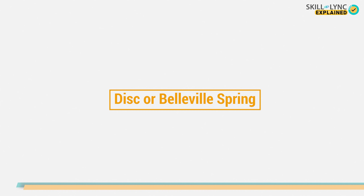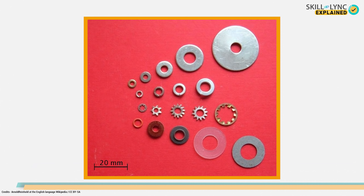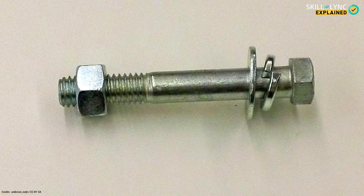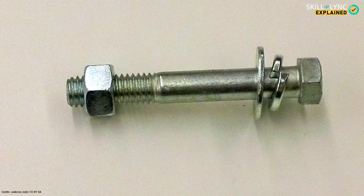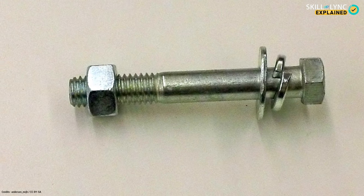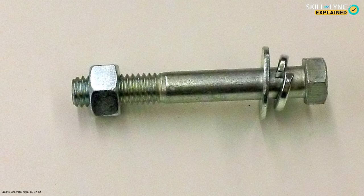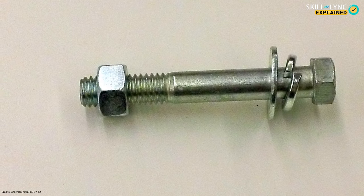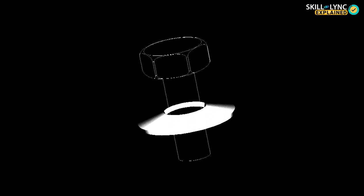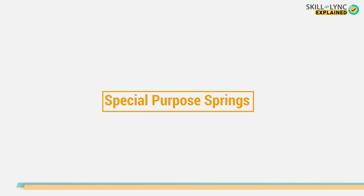The fifth type is the disc or bell spring. These springs are in the shape of a disc. When we use a screw, there is a round disc-shaped metal placed before tightening it — this is called the disc or bell spring. They are used to keep the screw from vibrating loose.